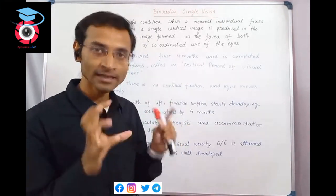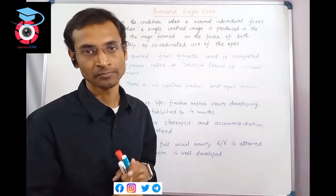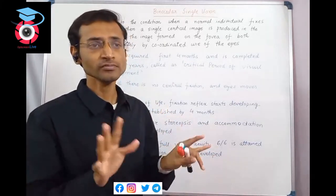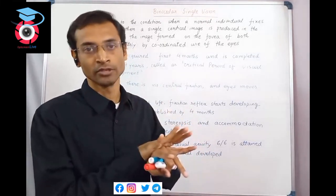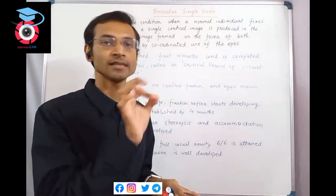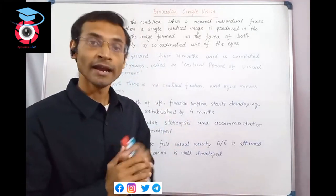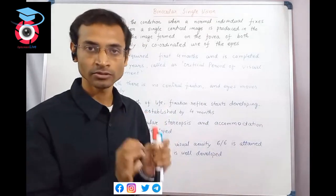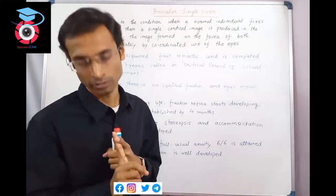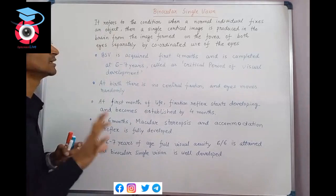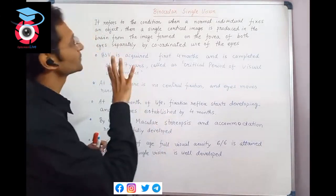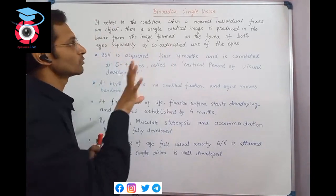We produce single objects - we focus on a single object and learn how to do it with a single mental image, a brain image. That is called binocular single vision. The definition is complete. We should note which points we must not miss out regarding binocular single vision.